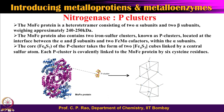The molybdenum iron protein contains an iron-sulfur cluster called the P cluster. In this P cluster, you have one Fe4S3 unit fused with another Fe4S3 unit through one sulfur, giving a total composition of Fe8S7. This P cluster functions in electron transfer, accepting electrons from the iron-sulfur cluster in the iron protein upon ATP hydrolysis-driven conformational change.